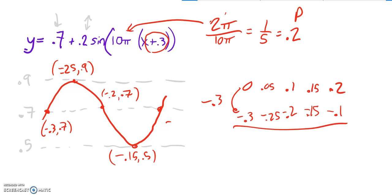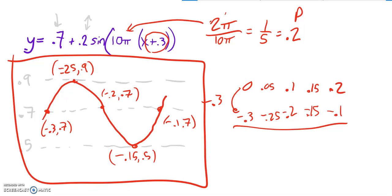And then the last point would be negative 0.1, oh, 0.7. And there's my graph. Use it well.